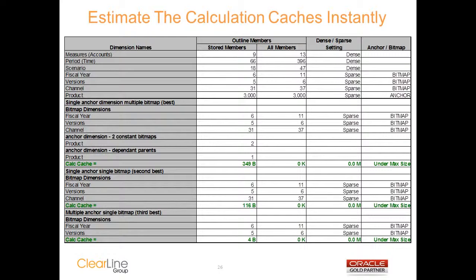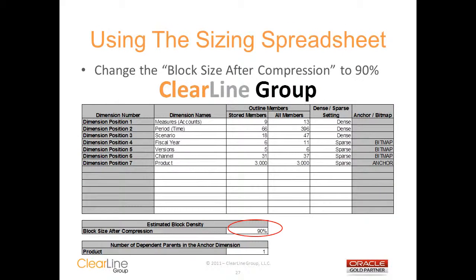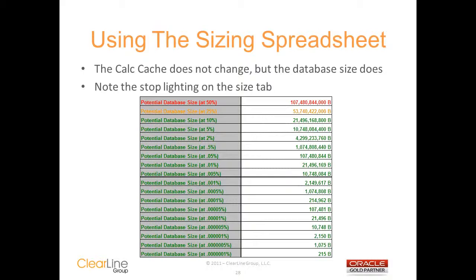This tool has great value during requirements and design — it will let you do a lot of what-if analysis on your application before you even build it, improving your decision-making and helping you set appropriate expectations with the business. Now we can demonstrate some of the what-if ability and play with the design a little bit. The first thing we'll do is change our block size after compression from 30 to 90%. You can see that this did not have any impact on the calc cache, but it did increase the size of the database. You're creating the exact same number of data blocks, but the data block size is larger after compression and will take up more disk space. You can see some of the stoplighting beginning to change — the 50% of potential blocks being created line is now red, and the 25% line is yellow. The design would still work since you're probably going to create less than 1 or 2% of the potential blocks.